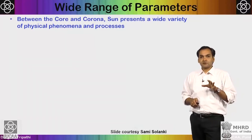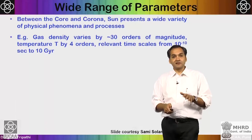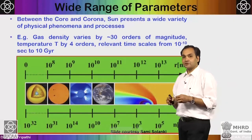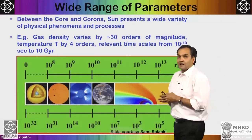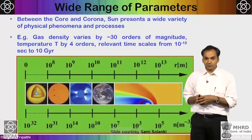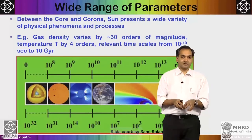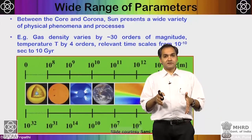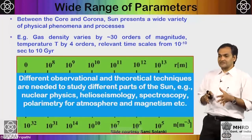Between the core and corona, the sun presents a wide variety of physical phenomena. Gas density varies by 30 orders of magnitude, temperature by 4 orders of magnitude, and relevant timescales range from 10 to the power of minus 10 seconds — the rate of nuclear reactions — to 10 gigayears, the total age of the sun. The photons generated at the core take about a million years to travel all the way to the surface.